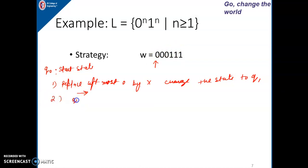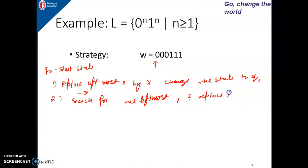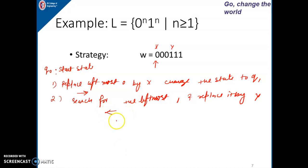The second step is: search for the leftmost 1 and replace it by y. We read 0, replace it by x, move towards the right direction until we get the first leftmost 1, then read 1 and replace it by y. After replacing it by y, we move towards the left direction to obtain the leftmost 0 again, and steps 1 and 2 are repeated.